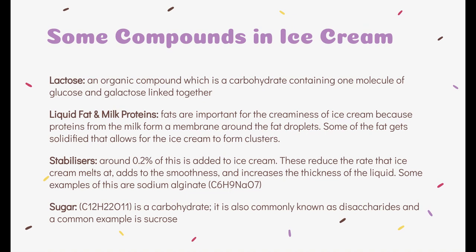Some compounds in ice cream. Lactose is an organic compound which is a carbohydrate containing one molecule of glucose and galactose linked together. Fats are important for the creaminess of ice cream because proteins from the milk form a membrane around the fat droplets. Some of this fat gets solidified and it allows the ice cream to form clusters.